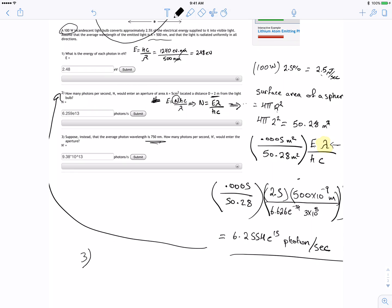You can do the whole thing again, but what I did is I took this answer, 6.2554 times 10 to the 13, divide this by 500 nanometers, and then multiply it by 750 nanometers, just to make it really quick, better than doing the whole thing again.